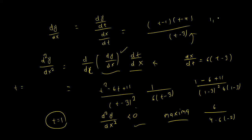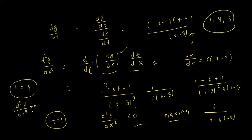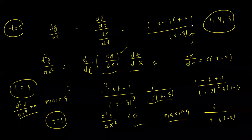The critical points are t = 1, t = 4, and t = 3. At t = 4, checking d²y/dx² gives a value greater than 0, so it will be a minimum. At t = 3, dx/dt = 0, so dy/dx is not defined.